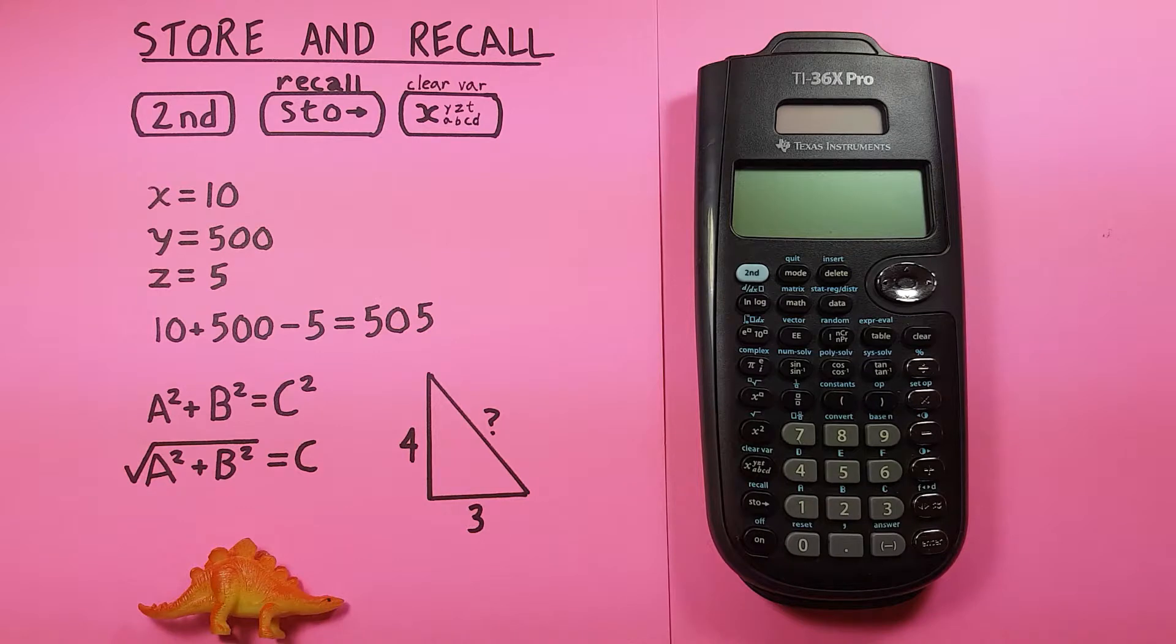The store and recall function is great for also doing formulas with variables like a, b, and c in it, because we can choose to display the variable rather than the number. So, for example...